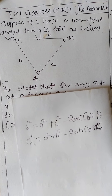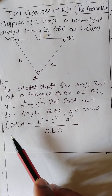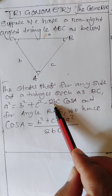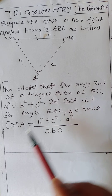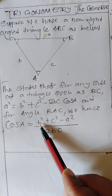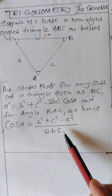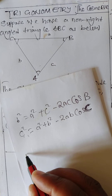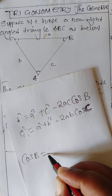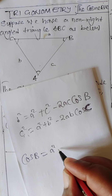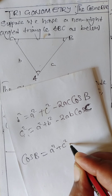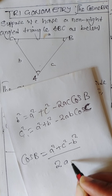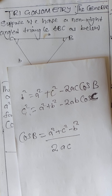Similarly, if you want to find an angle, we use the same formula but rearrange to make the angle the subject. Starting from a squared equals b squared plus c squared minus two bc cos A, making cos A the subject gives: cos A equals b squared plus c squared minus a squared, all over two bc. For angle B: cos B equals a squared plus c squared minus b squared, all over two ac.